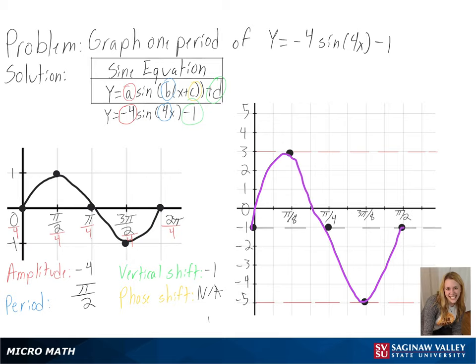But since our amplitude is negative, we will need to flip the whole graph upside down. And with that, we have graphed one period of y equals negative 4 times sine of 4x minus 1.